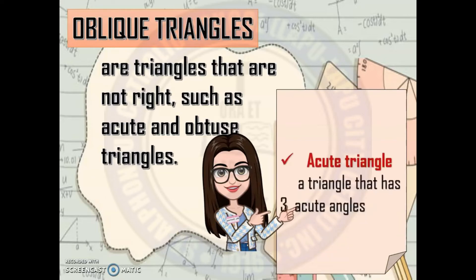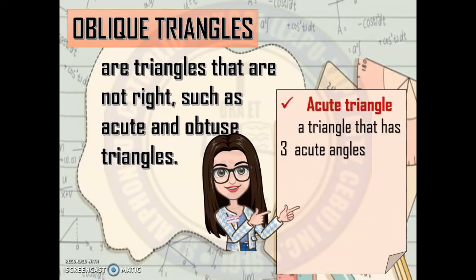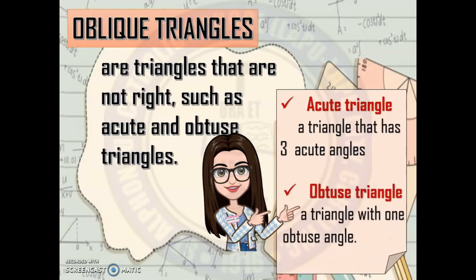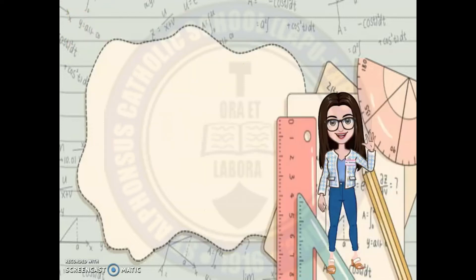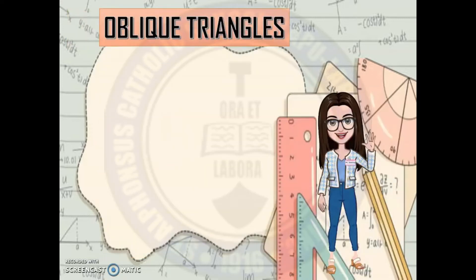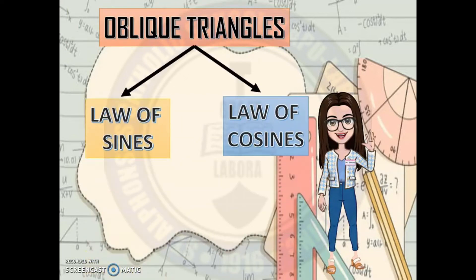As we recall, an acute triangle is a triangle that has three acute angles, while an obtuse triangle is a triangle with one obtuse angle. So these are classified as oblique triangles. We can solve oblique triangles in two ways: we can use the Law of Sines or the Law of Cosines. But we need to identify first what type of case the given problem is.